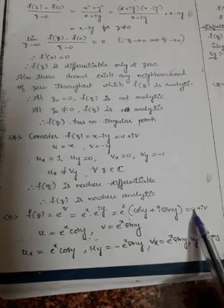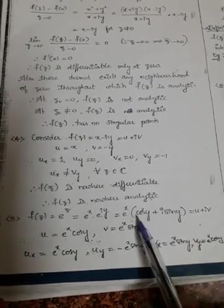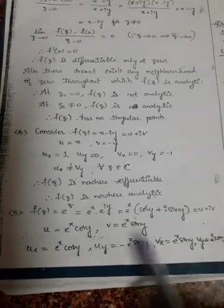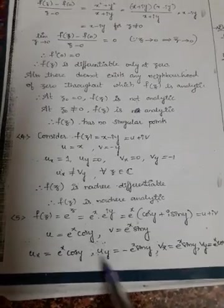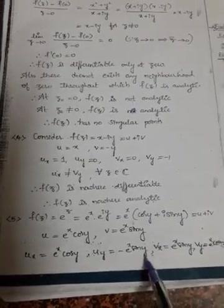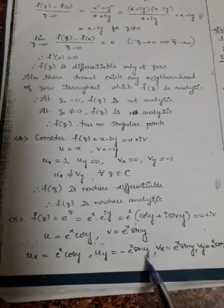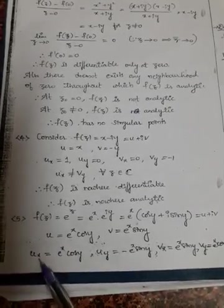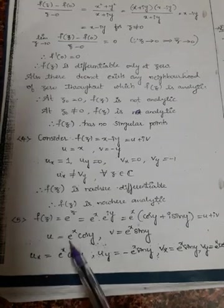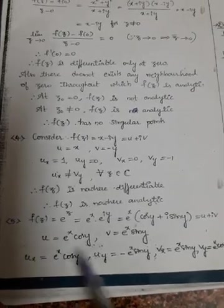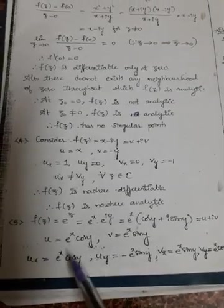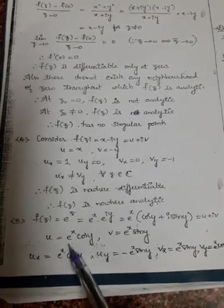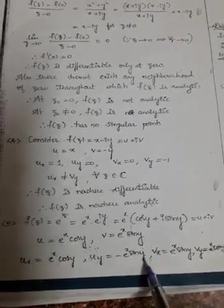Therefore, u = e^x cos y and v = e^x sin y. So u_x = e^x cos y, u_y = minus e^x sin y. Differentiating with respect to x gives e^x, and differentiating cos y with respect to y gives minus sin y, so u_y = minus e^x sin y.